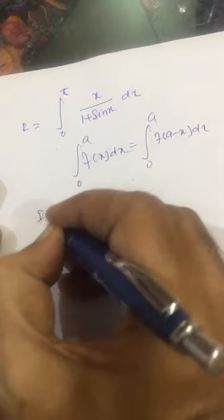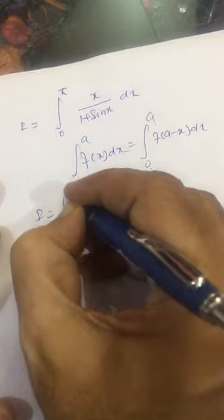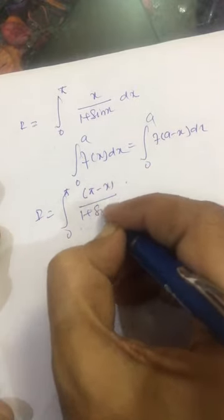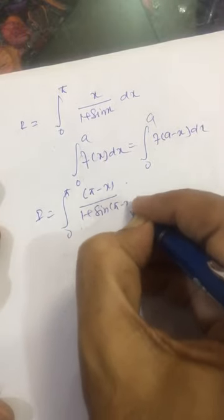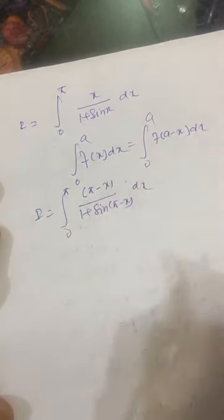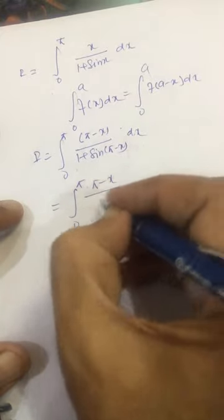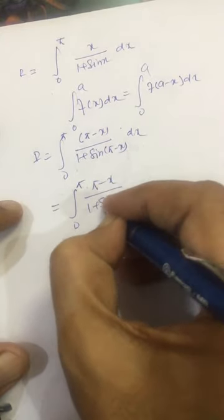Using this theorem we get i equal to integral 0 to pi of (pi minus x) divided by (1 plus sin(pi minus x)) dx. This we can write as integral 0 to pi of (pi minus x) divided by (1 plus sin x) dx.